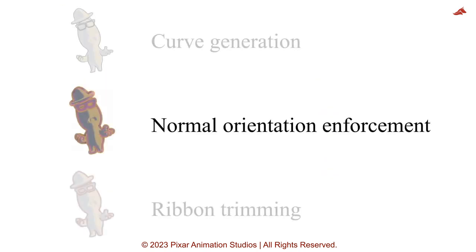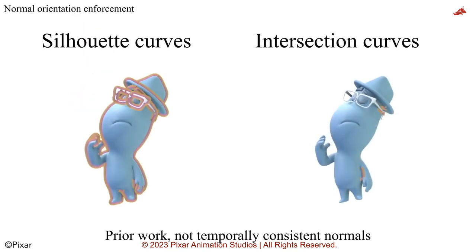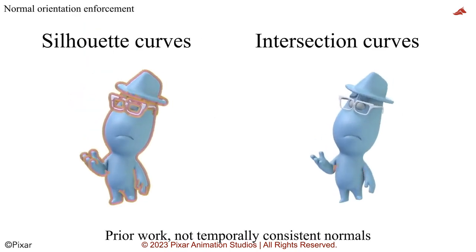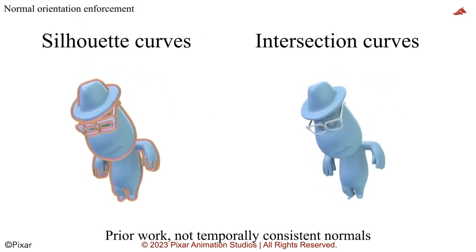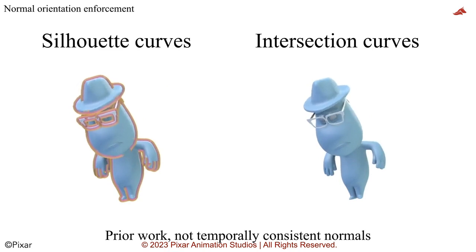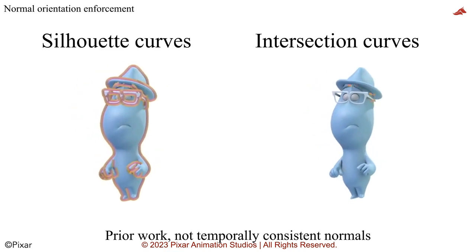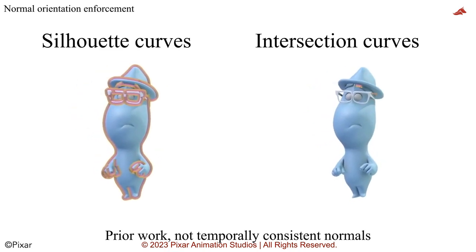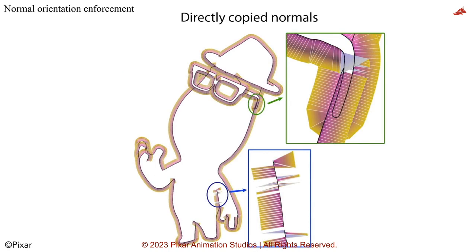Next, we create a temporally consistent parameterization along the curves. While simply copying the normals from the mesh produces pleasing results for silhouette curves, with intersection curves it causes distracting flickering. To create consistently oriented normals, we need to fix the copied normals which are skewed and inconsistent over space and time.